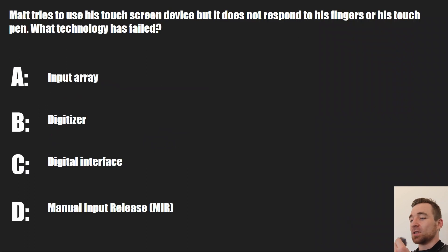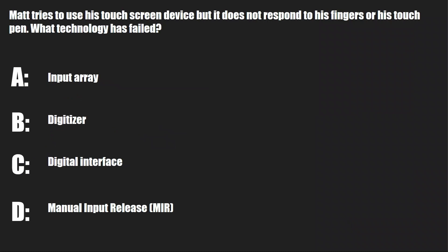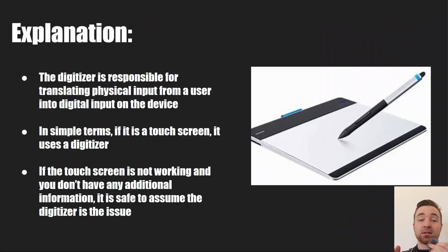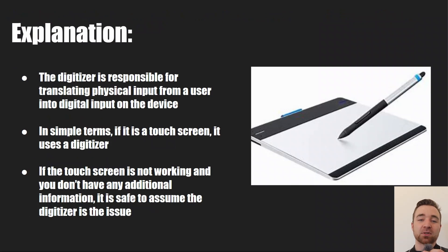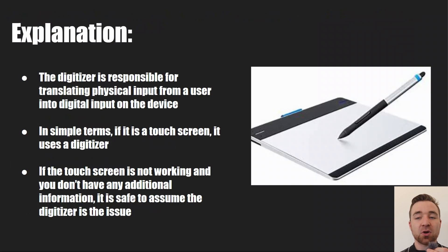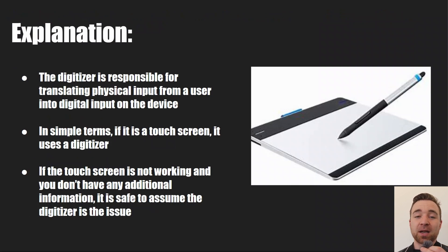Matt tries to use his touchscreen device but it does not respond to his fingers or his touch pen. What technology has failed? The answer is B — the digitizer. The digitizer is the piece of technology that allows your touch to make the device do things. Digitizers are used in touchscreen technology. If you touch a screen and nothing happens, that more than likely means there's a problem with the digitizer.